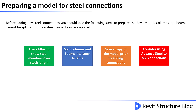Before adding any steel connections, you should take the following steps to prepare your Revit model. Columns and beams cannot be split or cut once steel connections have been applied. Revit will transform the standard elements such as beams and columns to fabrication shapes to support details such as notches, holes and other cuts. When the elements are converted to fabrication shapes, the traditional tools such as cut, split and align cannot be used.